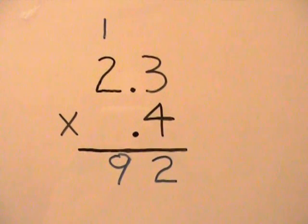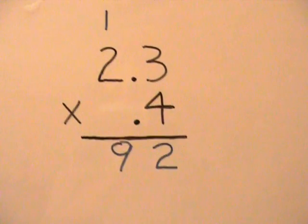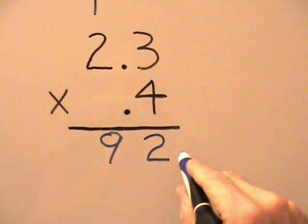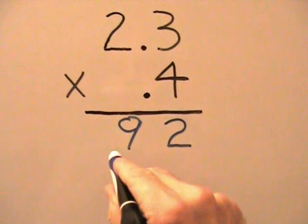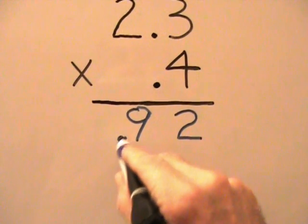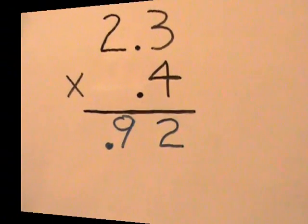So in our answer, we want to move the decimal two places to the left. We start at the extreme right, move our decimal two places to the left, and we have a final answer of .92.